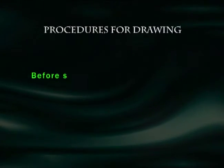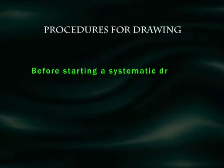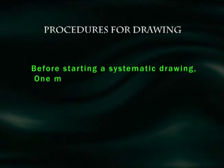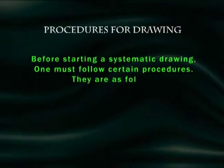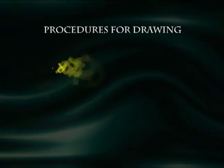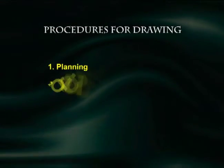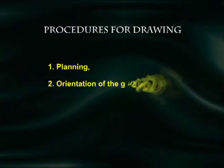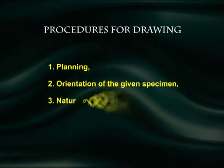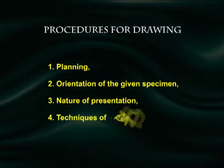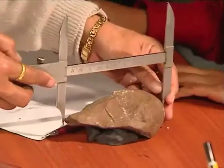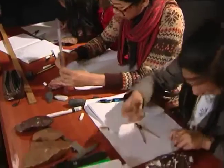Before starting a systematic drawing, one must follow certain procedures. They are as follows: number one, planning; number two, orientation of the given specimen; number three, the nature of presentation; and lastly, the techniques of drawing.